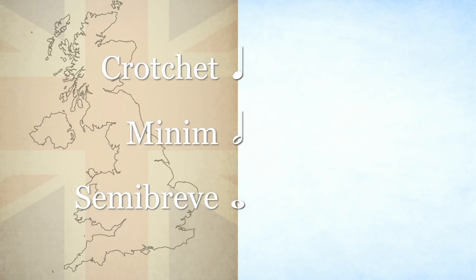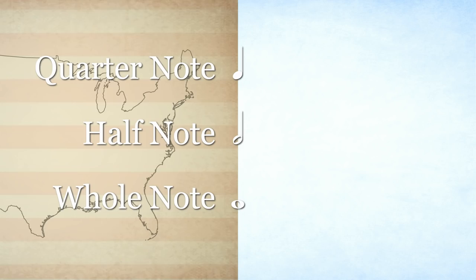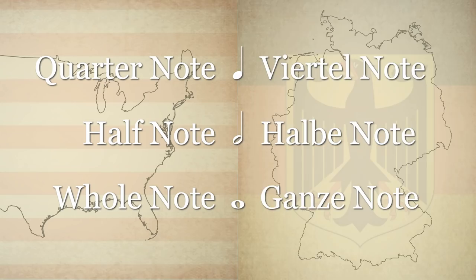In this video series we'll be using the British terms for these note values, which come from the Italian names for them. In America, the same symbols are named after their German names: quarter note, half note, and whole note. You don't need to know this to pass the exam, but if you ever come across these terms, now you'll know why.